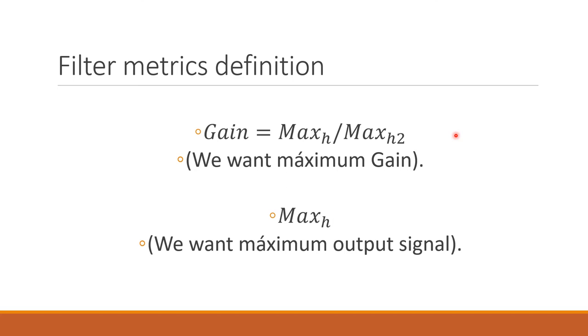Now we're going to define the metrics that are going to serve as an assessment tool for judging a combination of parameters. First of all, we have the gain, that is the maximum hTERT expression in the desired condition over the secondary maximum that we don't want. So we want maximum gain, and we also want a maximum output signal.